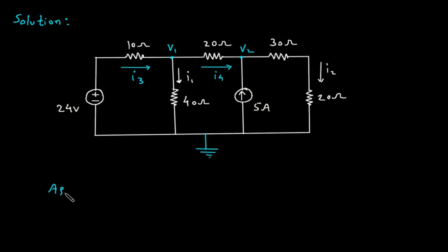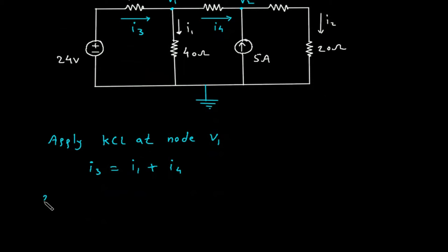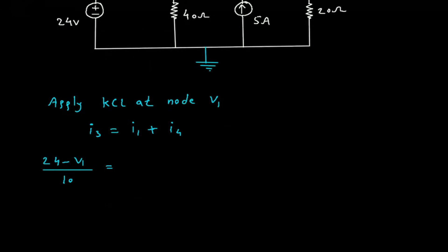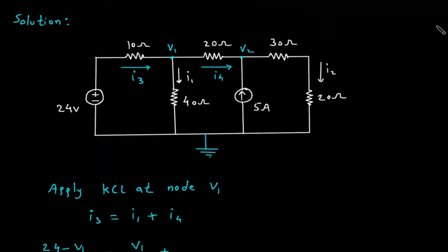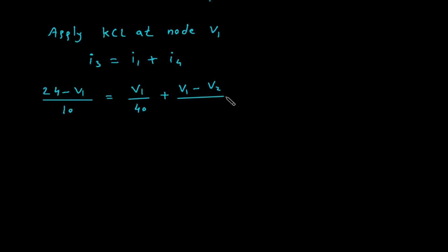Now we will apply KCL at node V1. I3 equals I1 plus I4. I3 is (24 − V1)/10. So (24 − V1)/10 = I1 + I4, where I1 = (V1 − 0)/40 and I4 = (V1 − V2)/20.